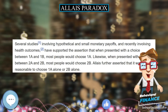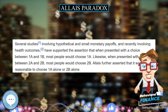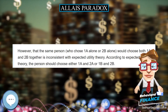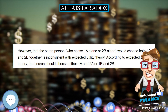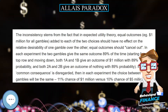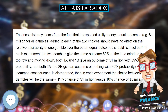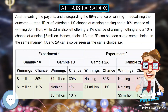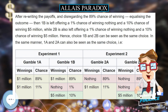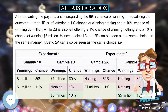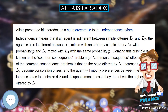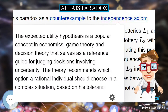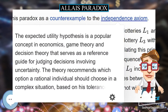The idea of the common consequence problem is that as the prize offered by L3 increases, L1 and L2 become consolation prizes, and the agent will modify preferences between the two lotteries so as to minimize risk and disappointment in case they do not win the higher prize offered by L3.